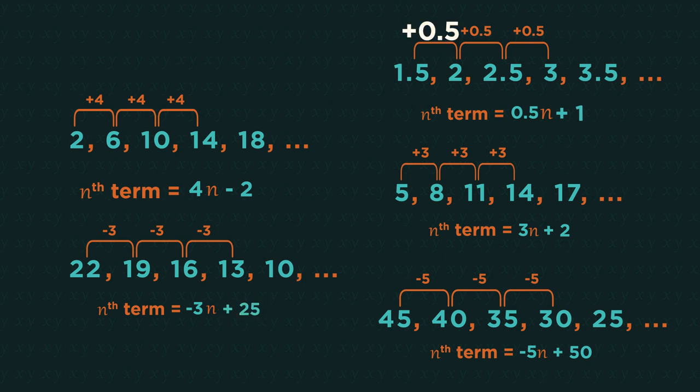From 0.5 to 1.5, you add 1. So there you have the nth term rule. Simple.